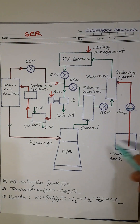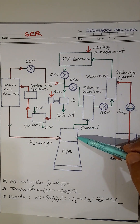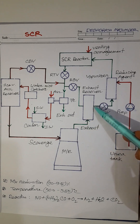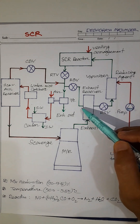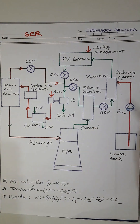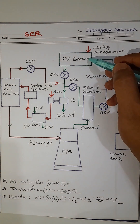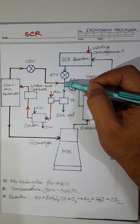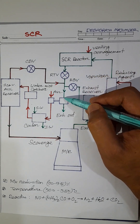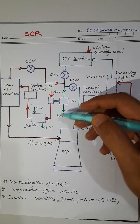In normal operation, from the main engine exhaust manifold, exhaust is drawn to the exhaust receiver. Then it can pass through this line and also through this line. Through this line it comes into the vaporizer, then into the SCR reactor. Then the exhaust gas passes through the turbocharger — that means the exhaust portion is over.